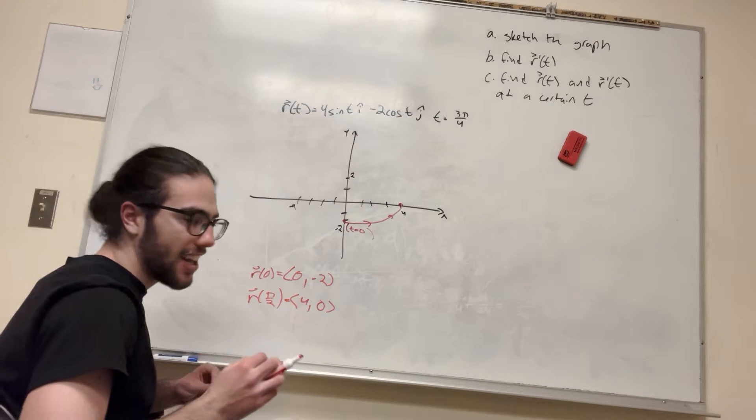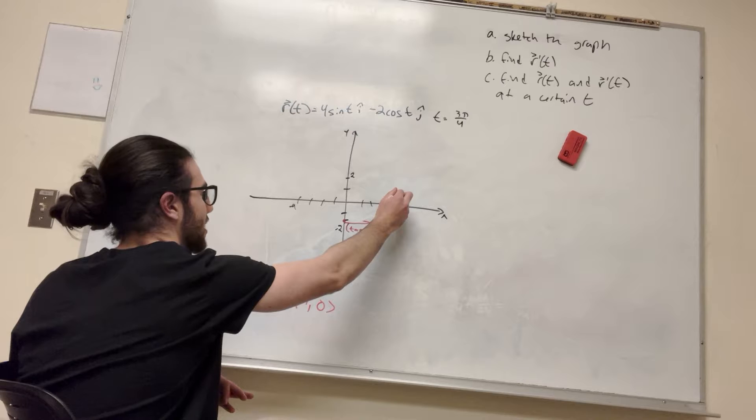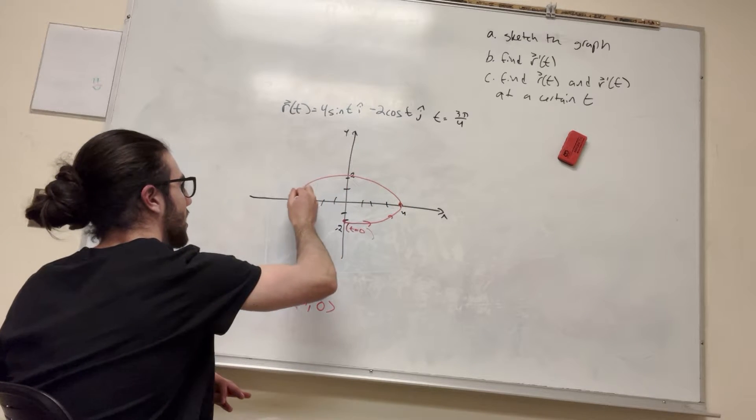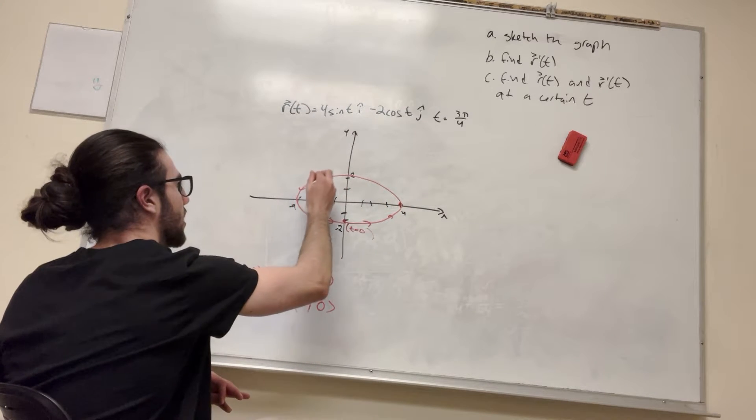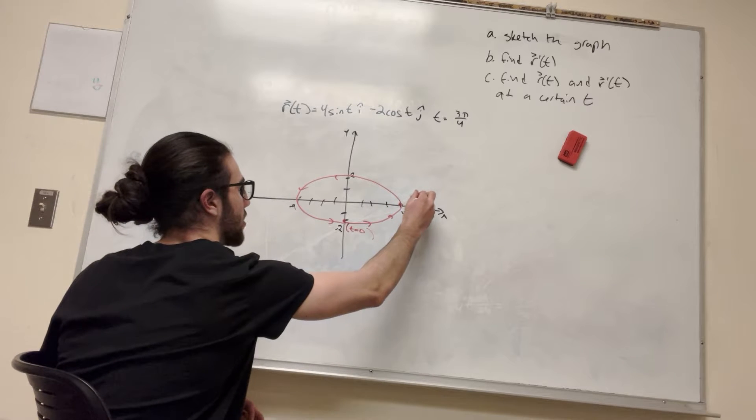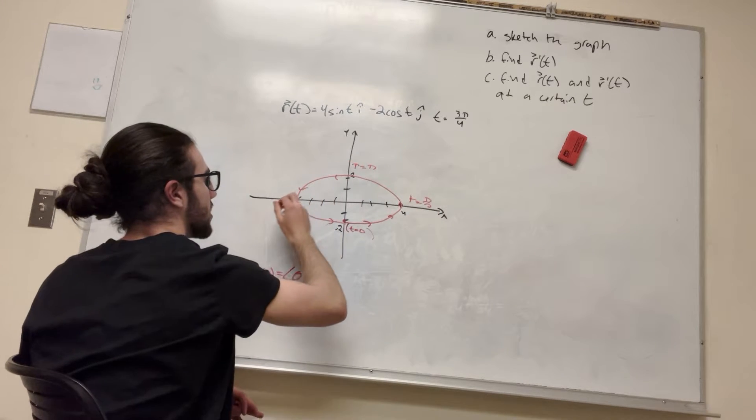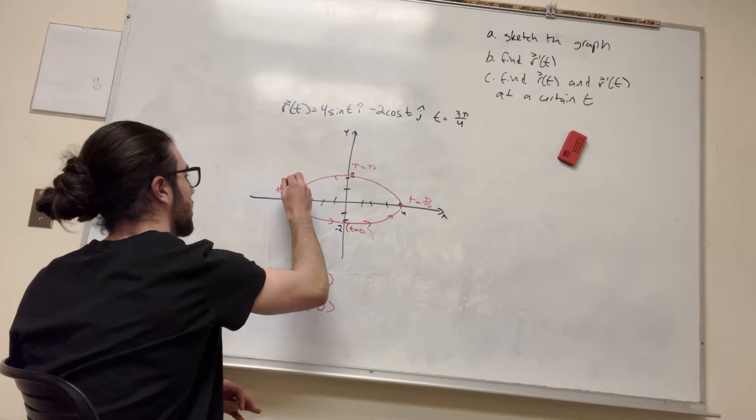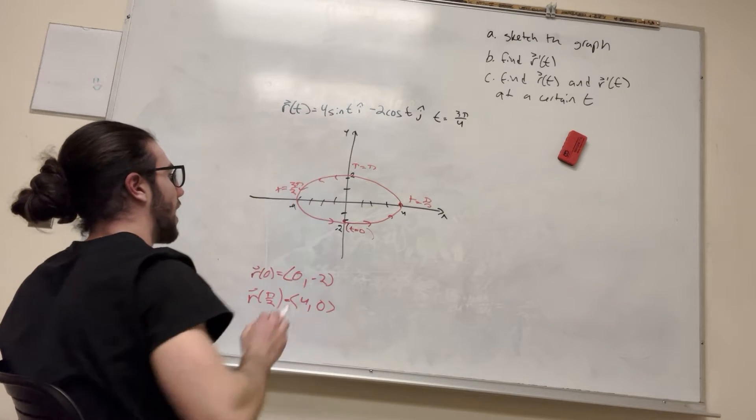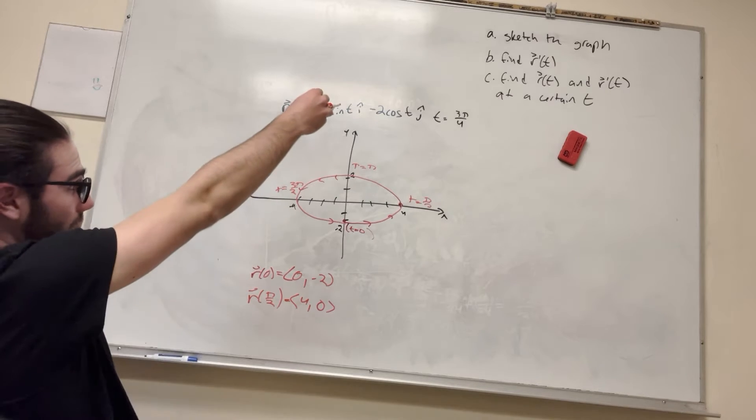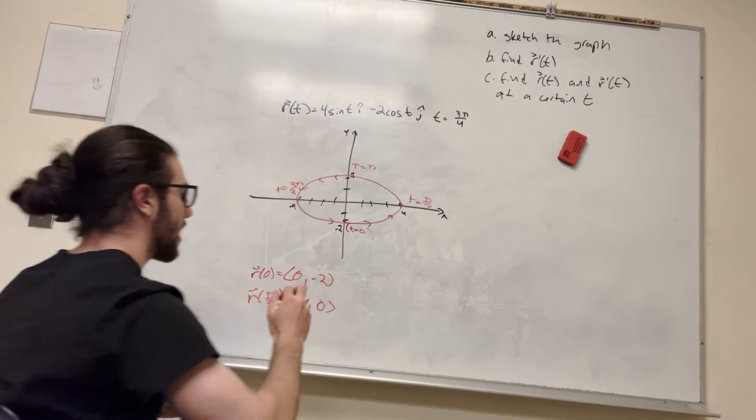But from here, really, all I can tell is I know that it's going to go in a circle like this, and you can plug in more functions if you want, but this is what our function is going to look like. This is going to be t is equal to π over 2, this is going to be t is equal to π, and this is going to be equal to t is equal to 3π over 2 for our function, and it goes around that way. But it wants us to find it at 3π over 4, so let's plug that in.